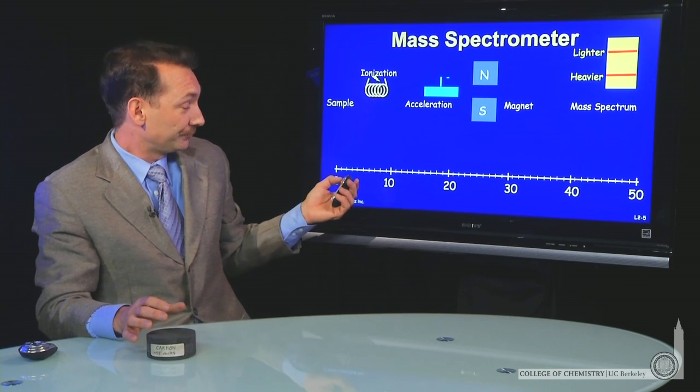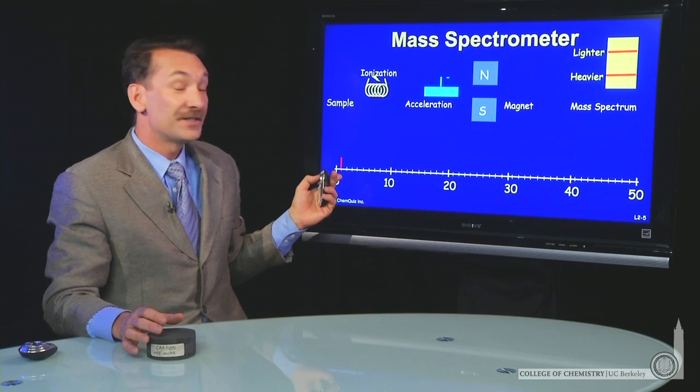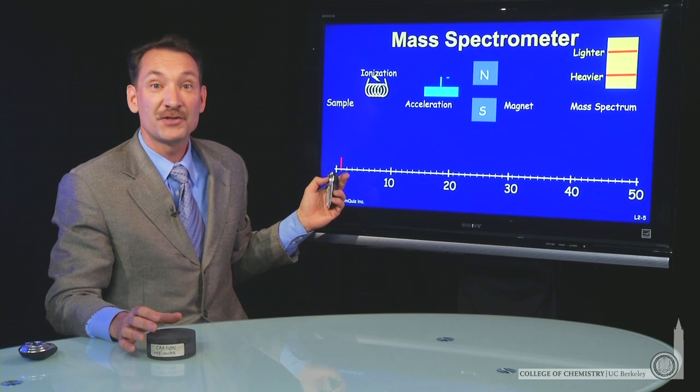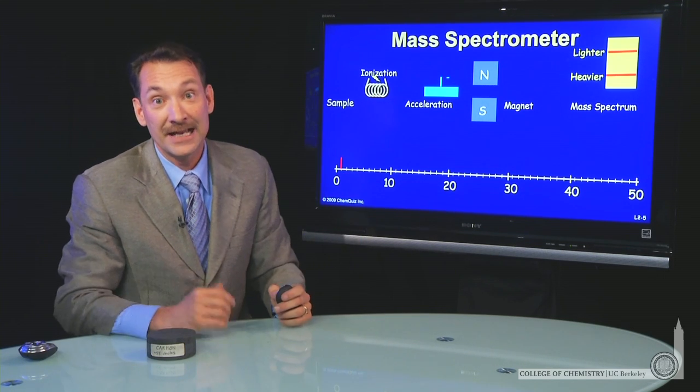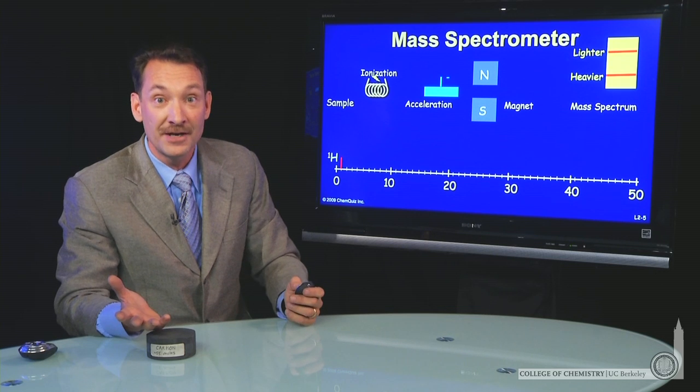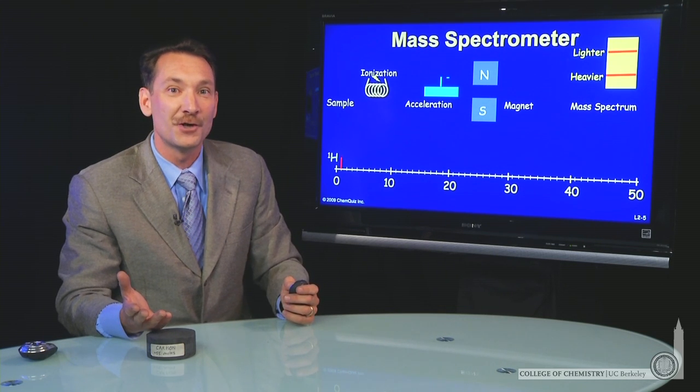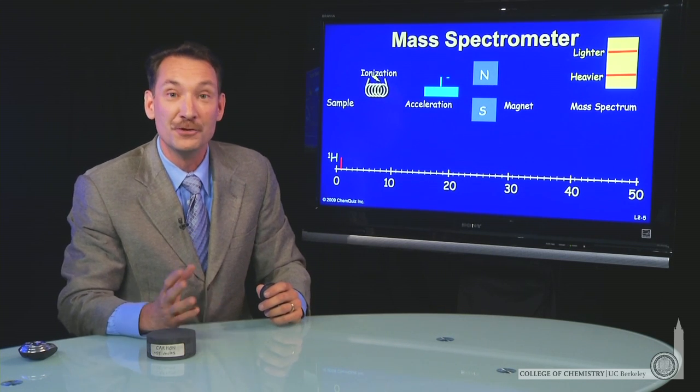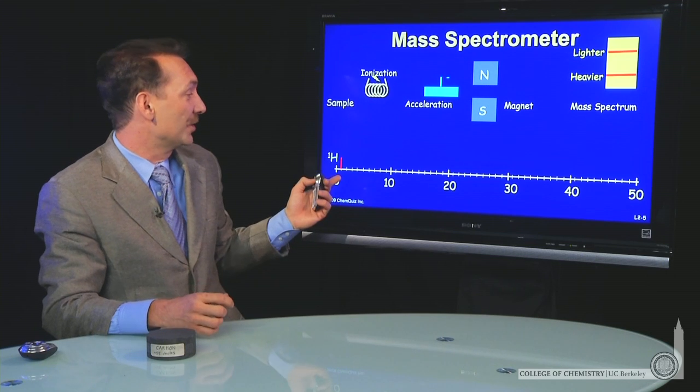So let's look at a few masses. We have, for instance, what would show up at mass 1? Well, the only thing that has mass 1, a single proton mass, would be hydrogen, the hydrogen isotope with no protons in the nucleus, a single proton.